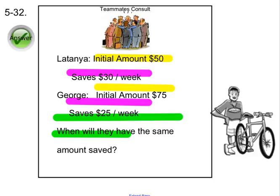George started a savings account with $75. He was able to save $25 a week. So this is what you need to do. You are going to need to come up with at least two different ways to find the time in weeks.